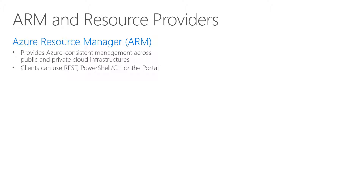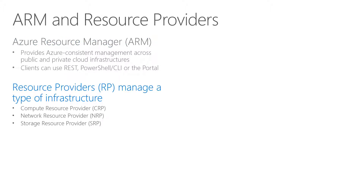Clients can use REST, PowerShell, CLI, other implementations in their favorite language like Python, or the portal. Resource providers are responsible to manage a specific type of infrastructure. Foundational services like Compute are implemented using the Compute Resource Provider (CRP). Network services like IP addresses, load balancers, vnets, and VPN gateways are implemented by our Network Resource Provider (NRP). Storage services like blobs, queues, and tables are implemented by the Storage Resource Provider (SRP). These are only a few examples.